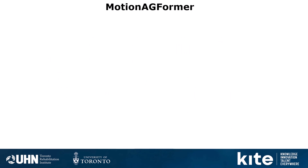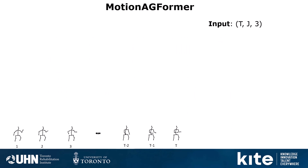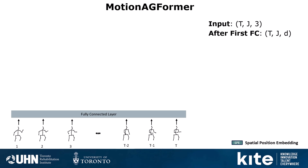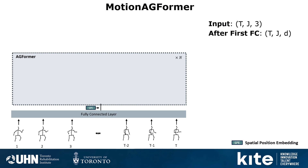The proposed Motion AGFormer receives a 2D pose sequence as the input, which is a tensor with shape T as the number of frames, J as the number of joints (which is 17 in our case), and 3 as X, Y, and confidence score. These are then passed to a fully connected layer which maps these three-dimensional vectors into a D-dimensional vector. After applying Spatial Position Embedding, we have AGFormer blocks, which we repeat n times.